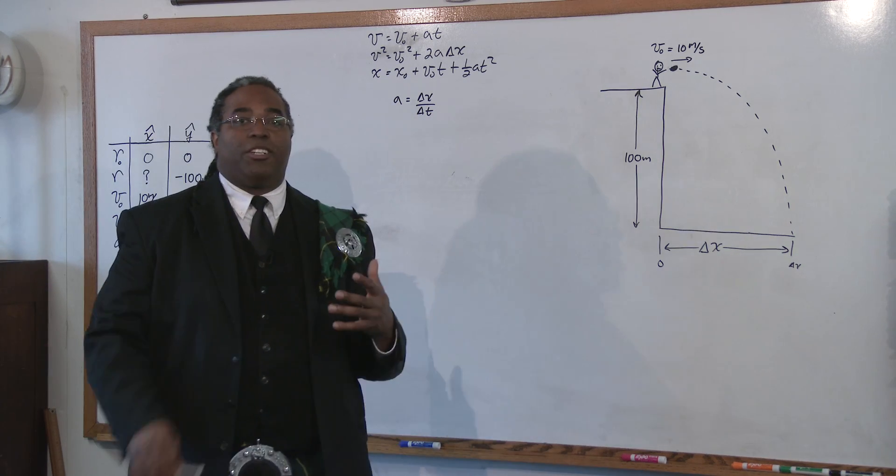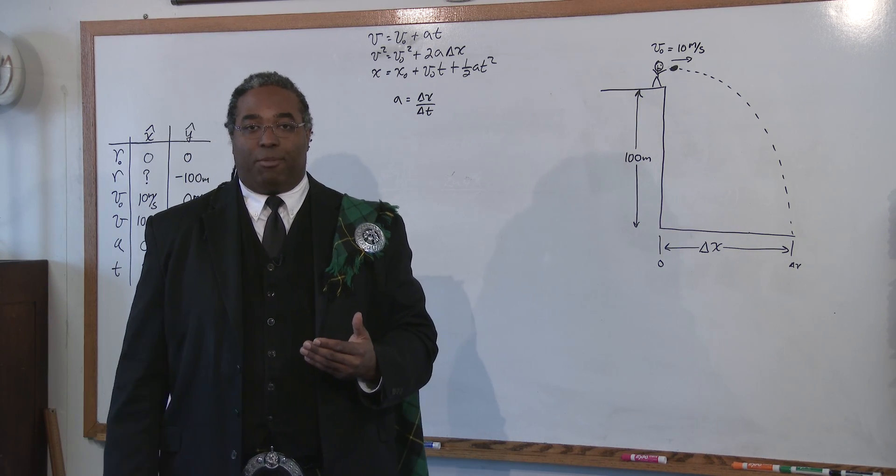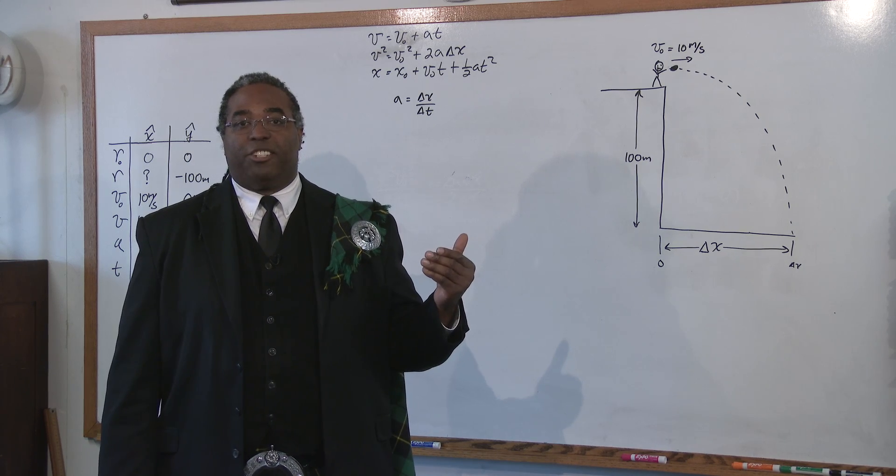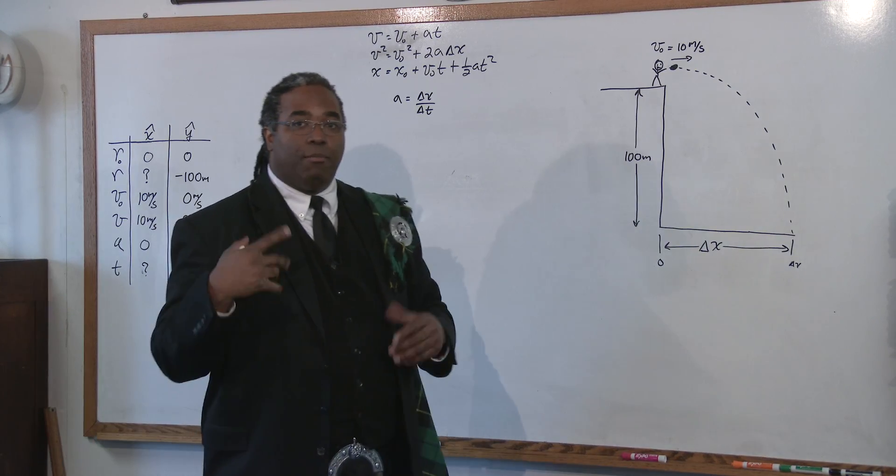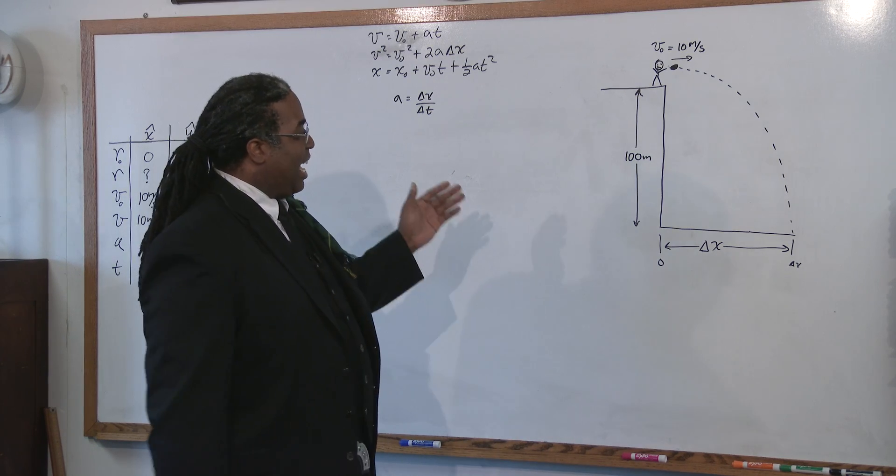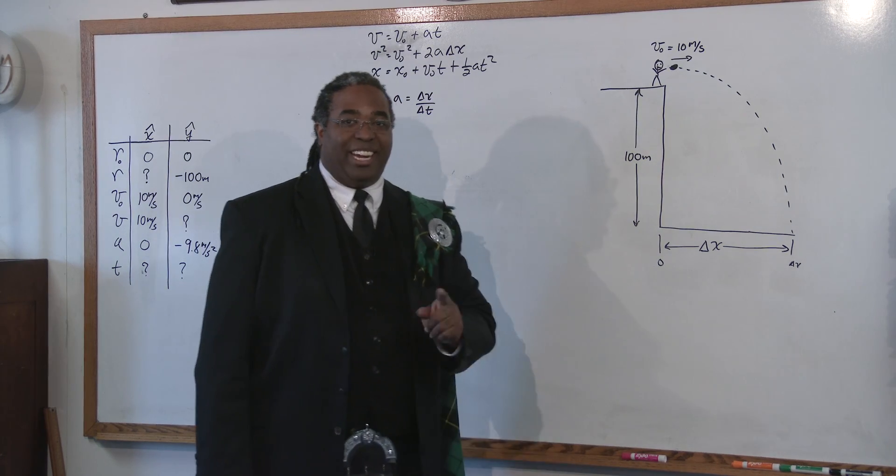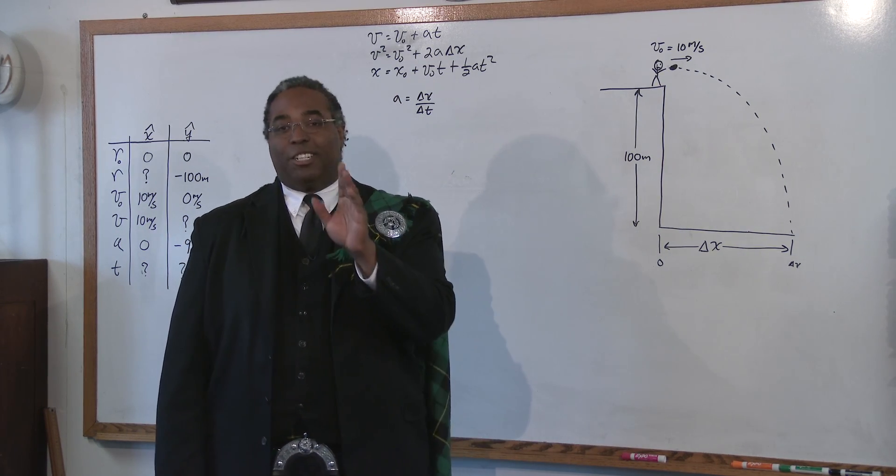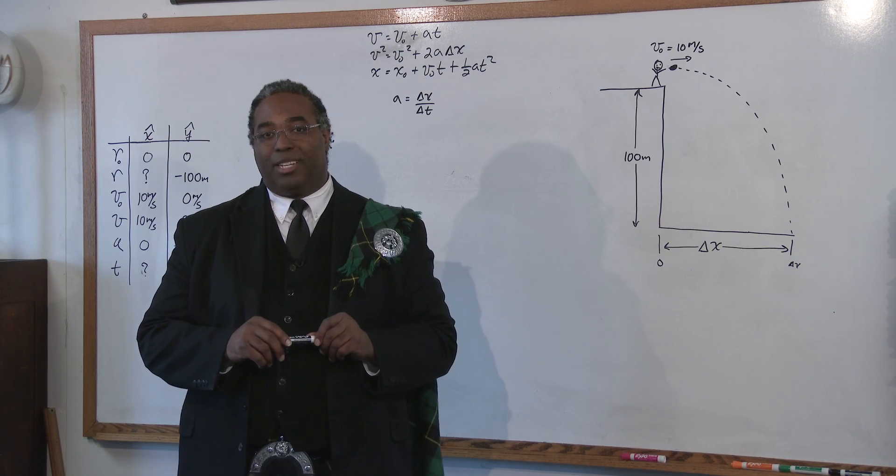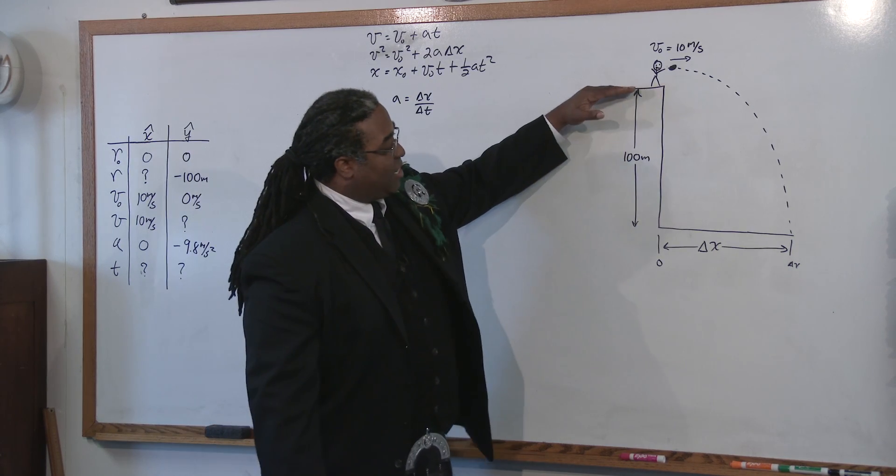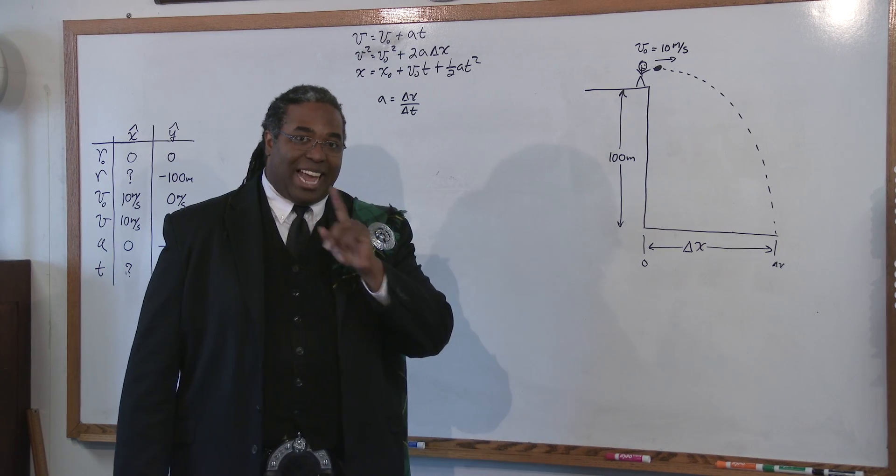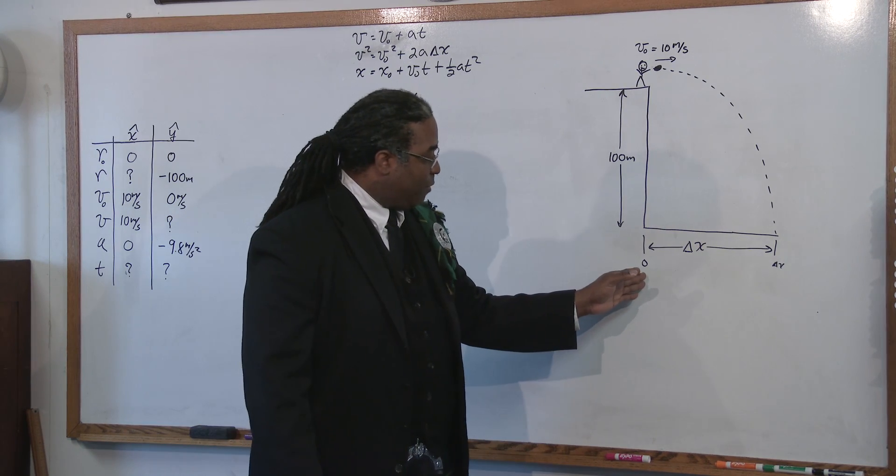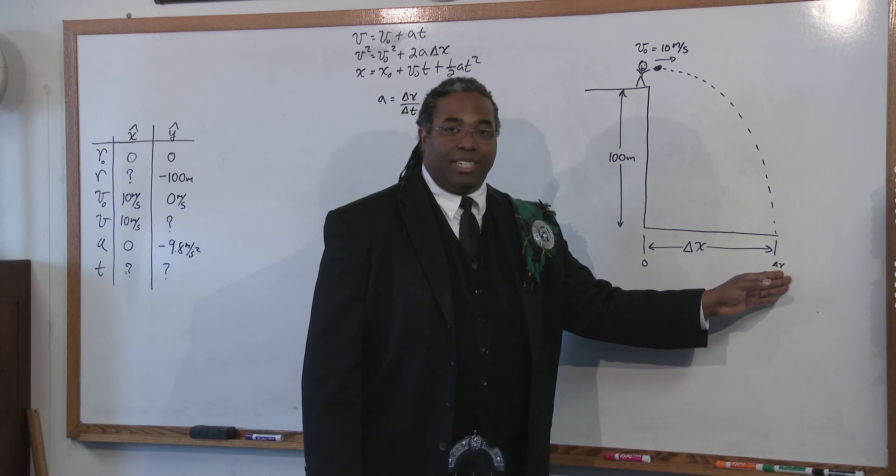That's the first thing that I want you to really get practice doing for this type of problem. Look at the given information and get comfortable setting up your table. But let's go on with the problem. How do we solve these type of problems? Here is the key to doing a projectile motion problem. The time that it takes to fall from up here to the ground is the exact same time that it takes to go from the base of the cliff to some distance out.